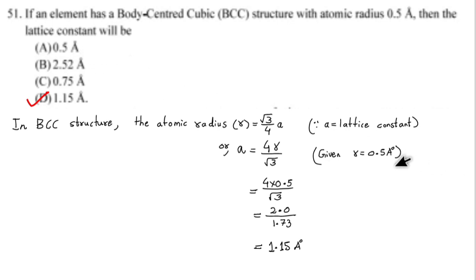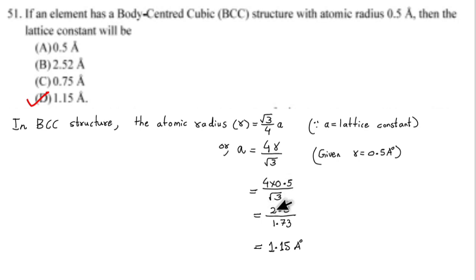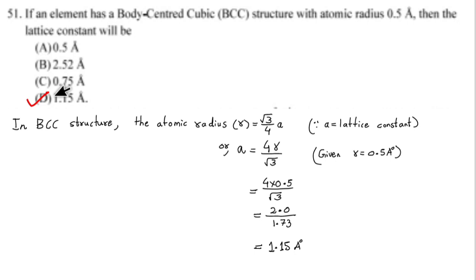Calculating: A equals 4 times 0.5 divided by root 3, which is 2 divided by 1.73. Our final answer is 1.15 angstrom. Option number D is the correct answer.